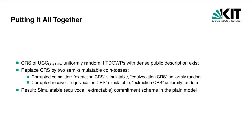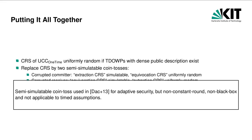To summarize: if trapdoor one-way permutations with dense public description exist, we can instantiate the commitment scheme UC-COM with a uniformly random CRS. This CRS can then be replaced by two semi-simulatable coin tosses. If the committer is corrupted, the extraction CRS will be simulatable and the equivocation CRS uniformly random. If the receiver is corrupted, the equivocation CRS is simulatable and the extraction CRS uniformly random. We have thus used a short-term trapdoor to get an equivocal commitment scheme and used it to establish a long-term trapdoor, obtaining a commitment scheme that is simulatable — i.e., extractable and equivocal — in the plain model. Semi-simulatable coin tosses have been previously used by Dachmann-Soled et al. to obtain adaptively secure composable MPC from garbled circuits puzzles. While we focus on static corruptions and polynomial time simulation from timed assumptions, Dachmann-Soled et al. consider adaptive corruptions and general constructions.